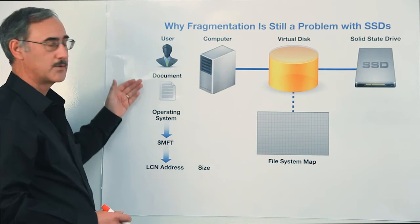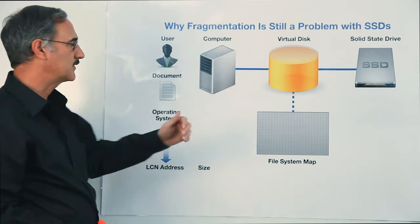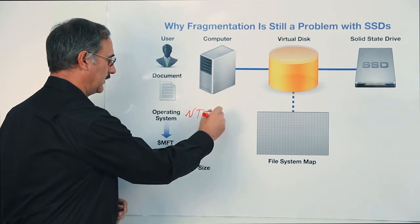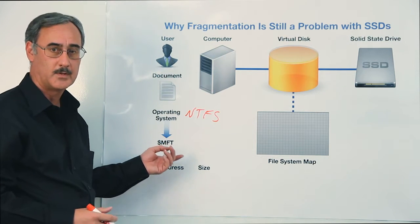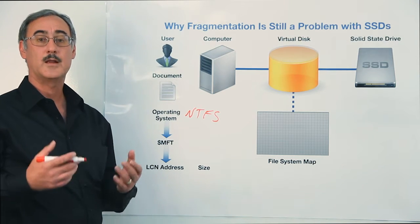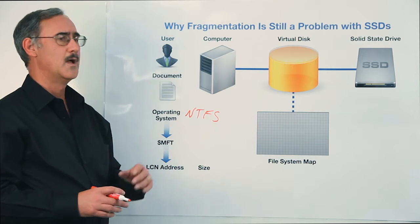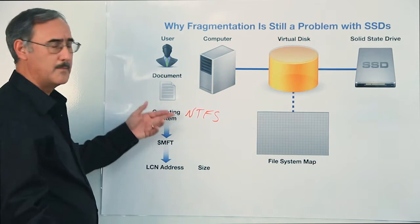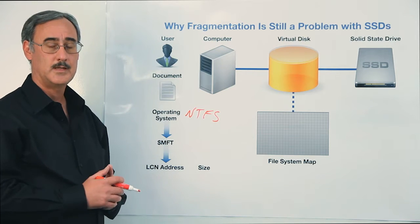A typical user trying to create a document doesn't really write directly to the storage device. It has to go through the Windows file system — NTFS — and through various internal components such as the master file table and the storage bitmap file. As a result, the file can be fragmented and broken into many pieces regardless of the type of storage. It doesn't matter if it's a mechanical spinning disk or a solid state disk; Windows treats them both the same in terms of how it allocates data blocks.